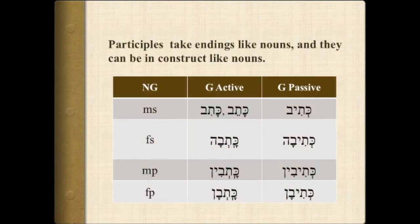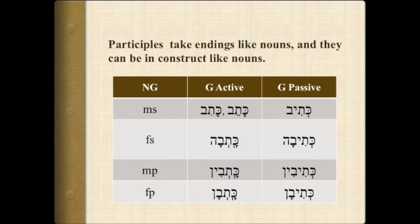Note the endings and vowel patterns of the active and passive participles. Notice that the passive participle has a characteristic holem internal vowel, and the endings are the same as you would find in a noun or adjective. Notice, however, that in the active participle, the vowel underneath the first consonant is lengthened. This is different from the perfect, in which you would have a reduced vowel.